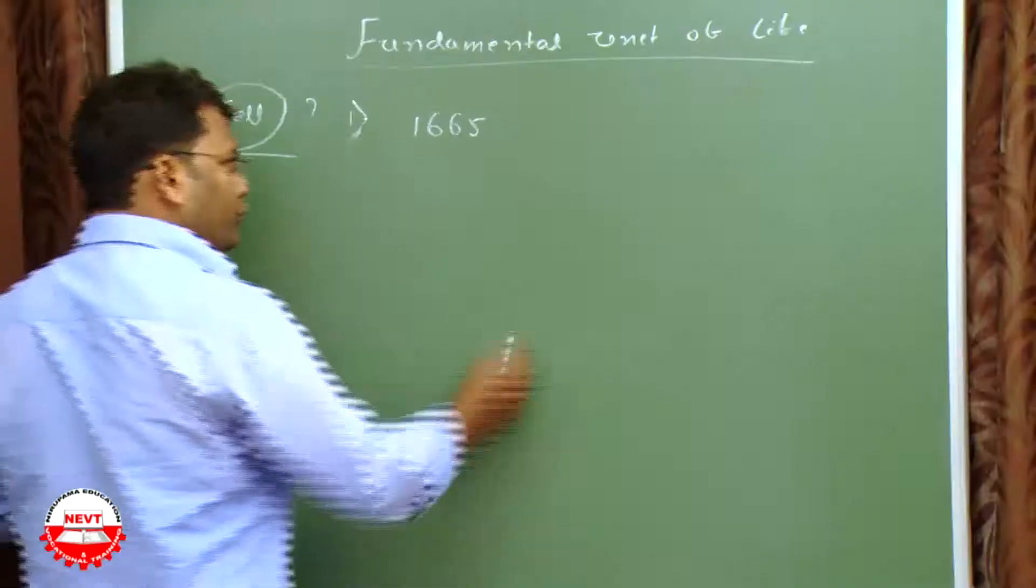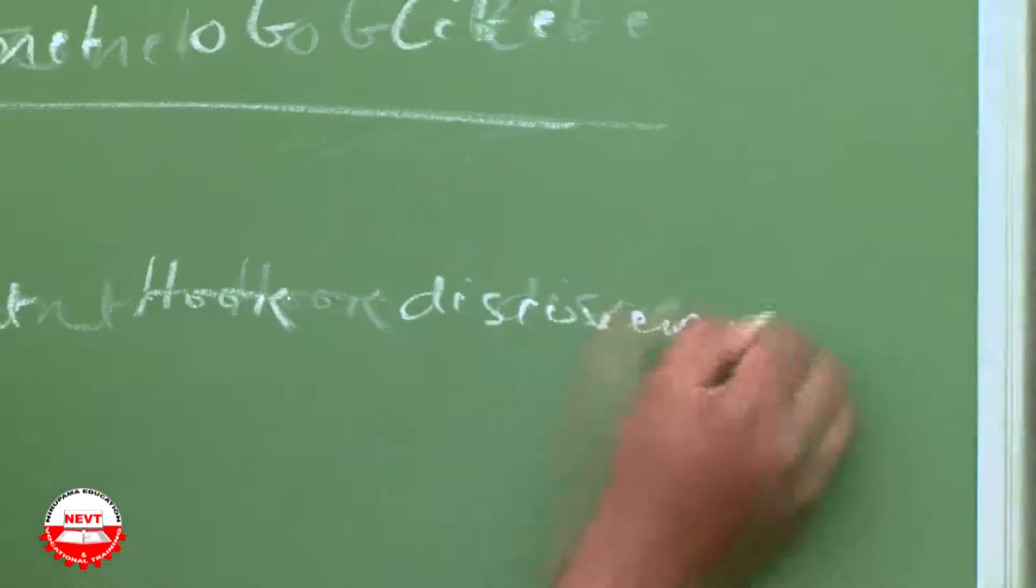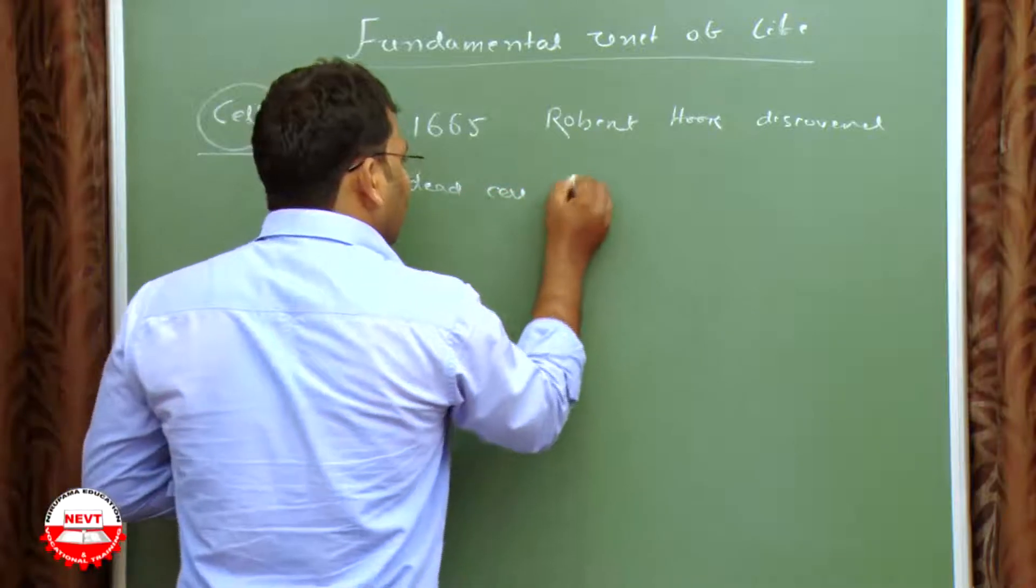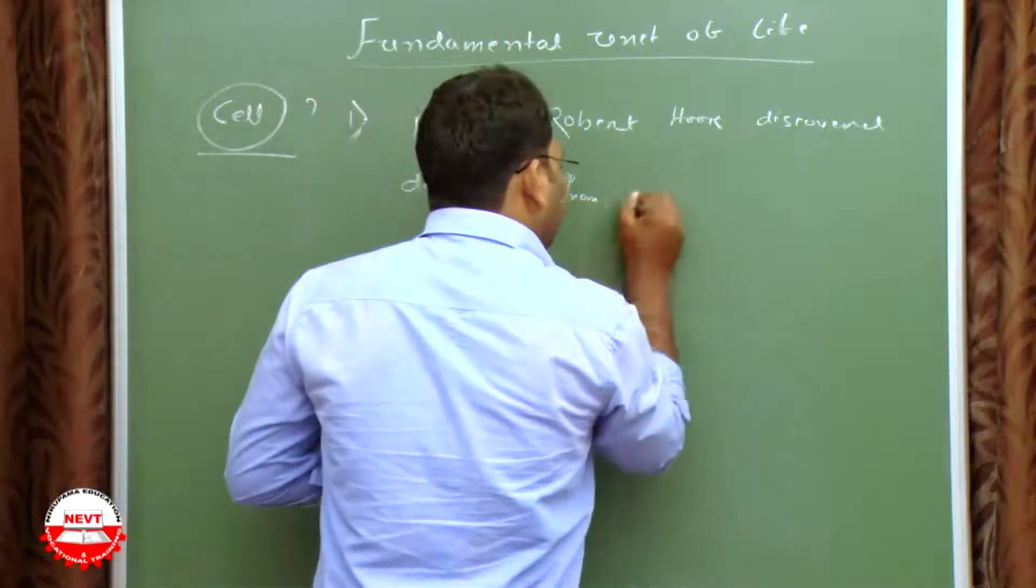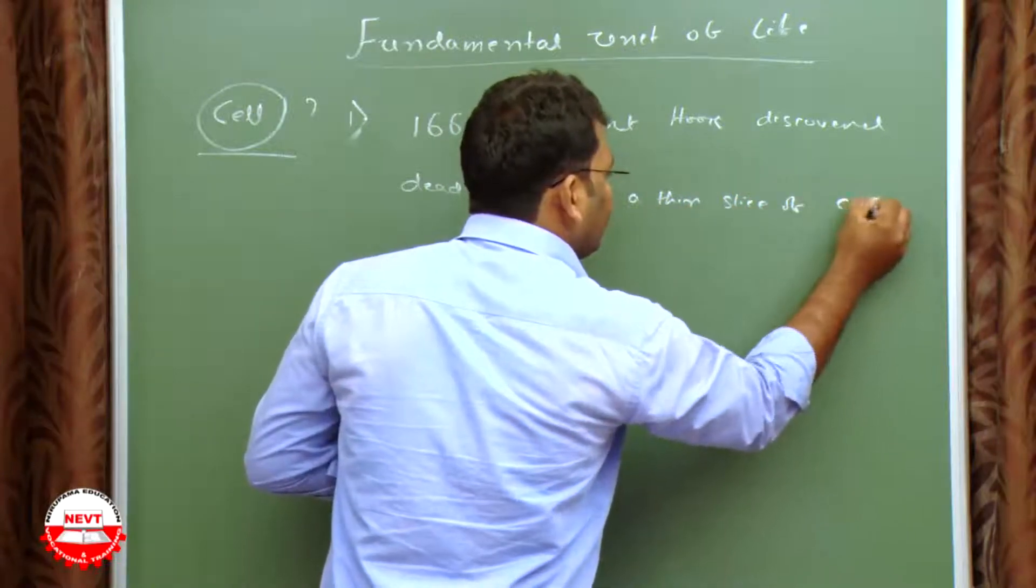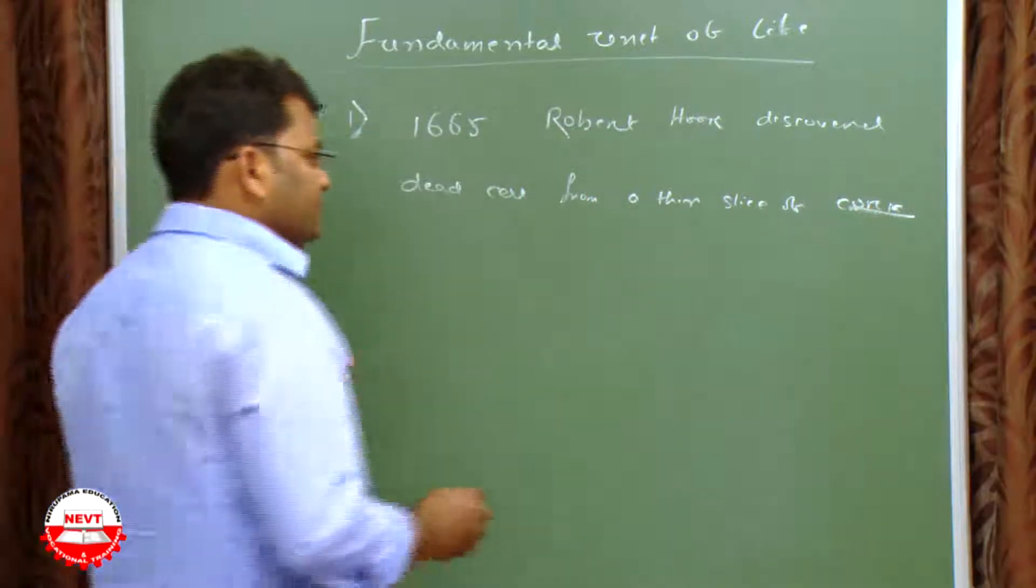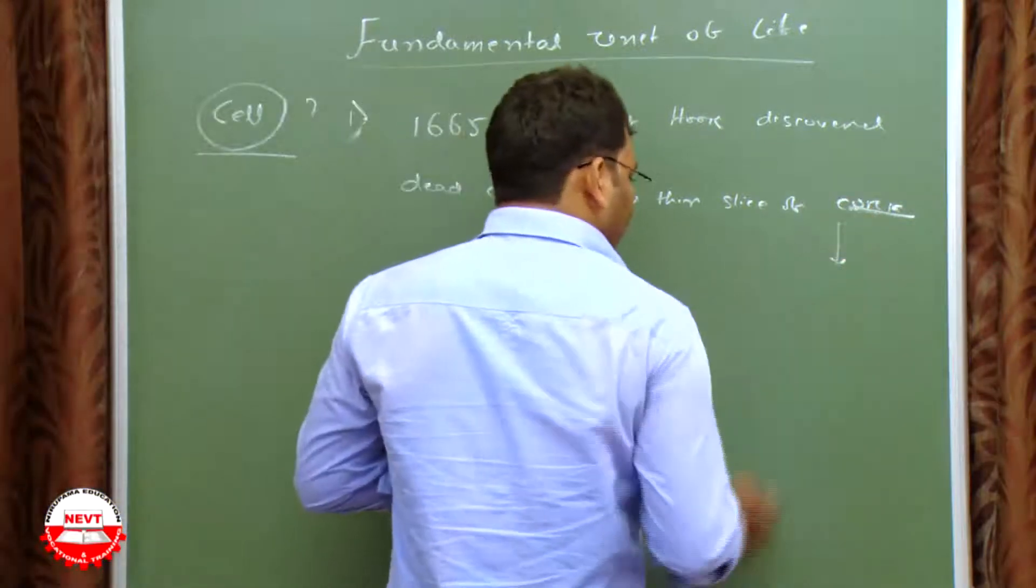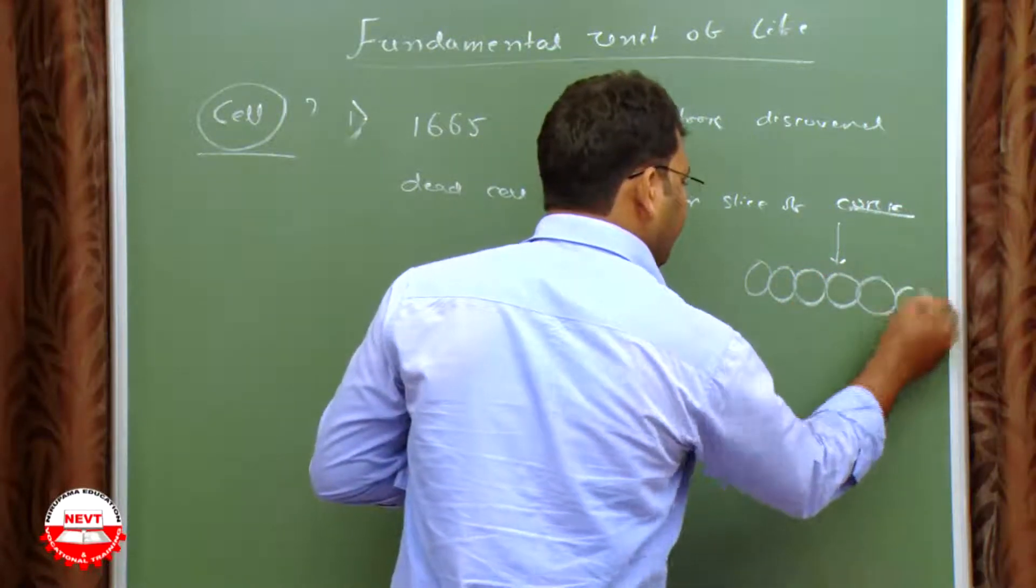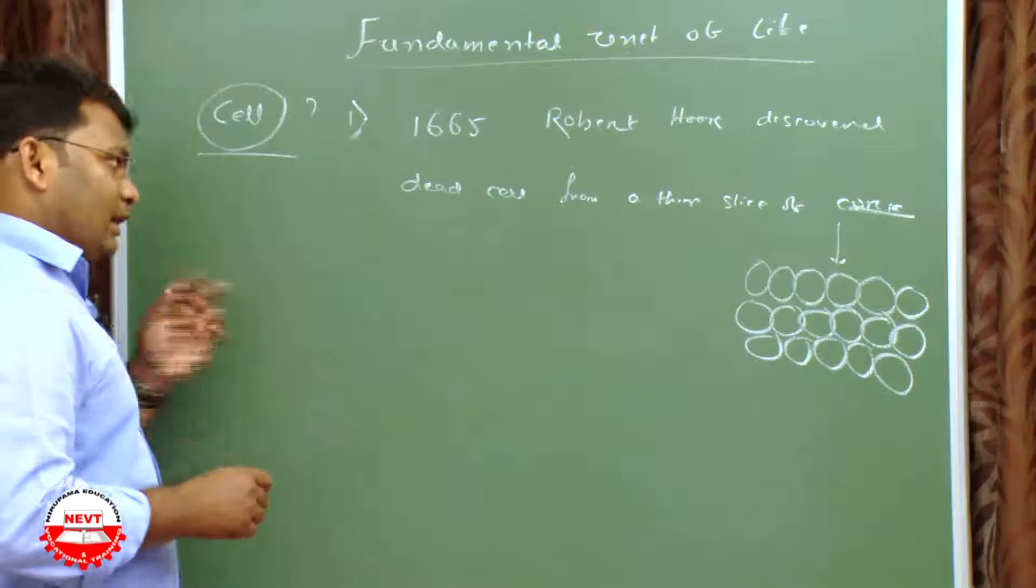The cell was first discovered by Robert Hooke from a thin slice of cork in 1665. Robert Hooke discovered dead cell from a thin slice of cork, and he saw honeycomb complex structures present in it by his simple microscope.